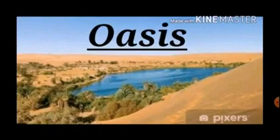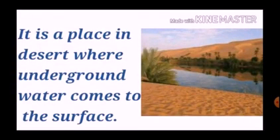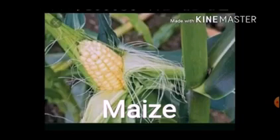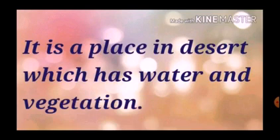Now let us see what an oasis is. It is a place in the desert where underground water comes to the surface. This area is full of greenery, and many crops are grown such as wheat, gram, jowar, bajra, maize, etc. An oasis is a place in the desert which has water and vegetation.